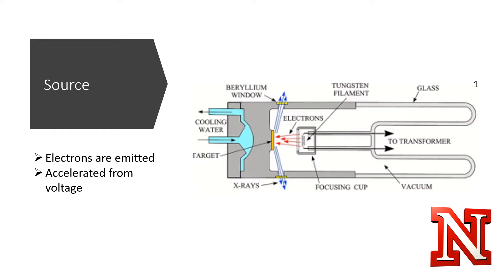Electrons bombard the target atomic structure, causing secondary electrons to be kicked out of the electron shells. Holes in the electron shell leave it in an unstable state. Electrons from higher energies will drop down to fill the space, releasing energy in the form of x-rays.